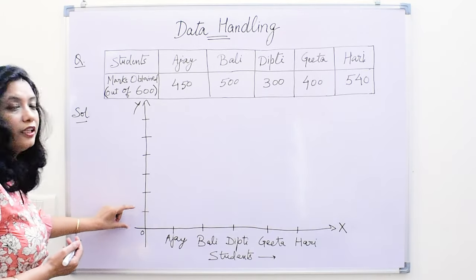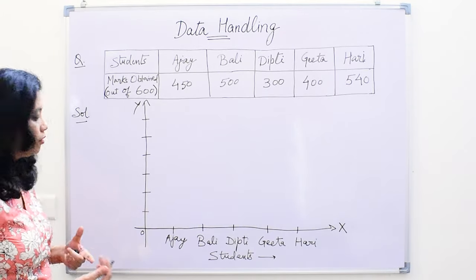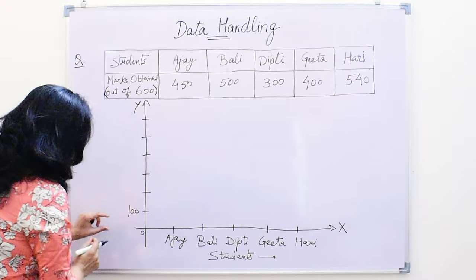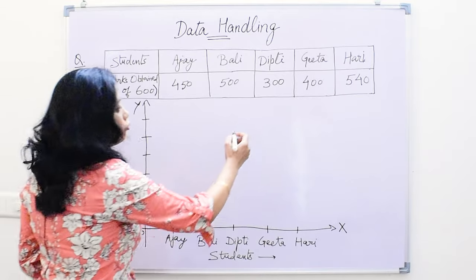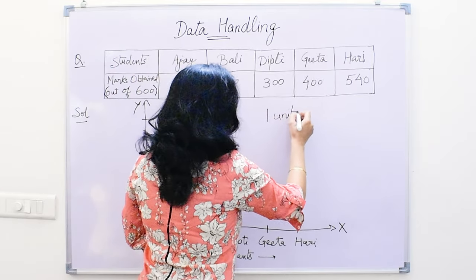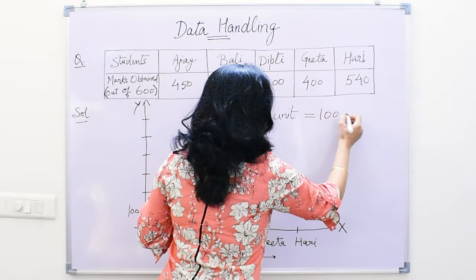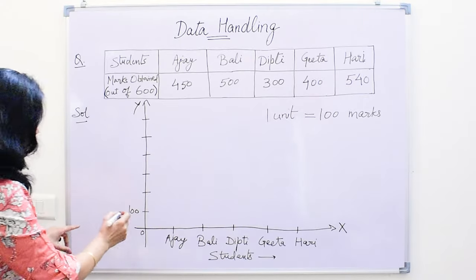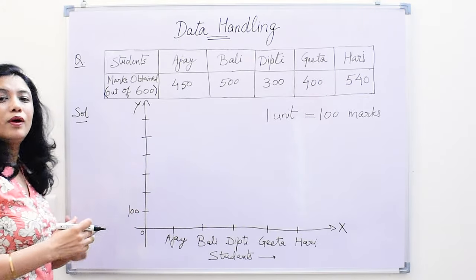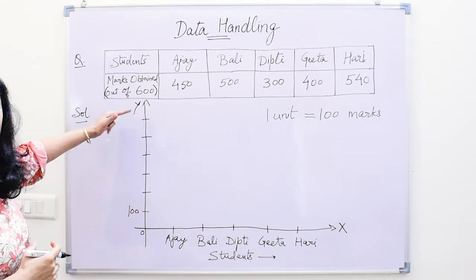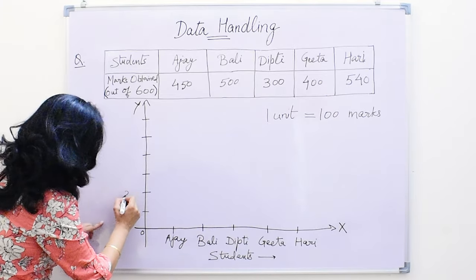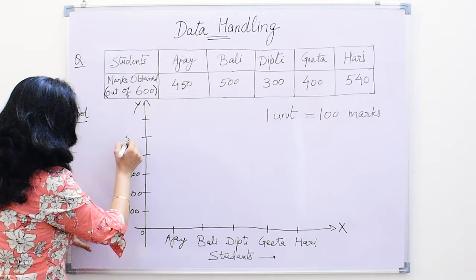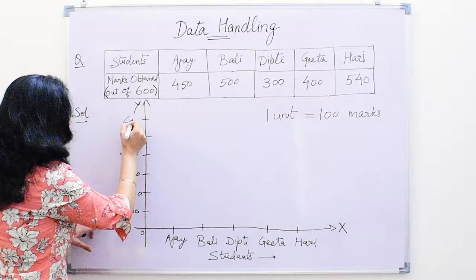We will take the unit accordingly. Here we are taking the unit as 100 — one unit is equal to 100 marks. Here we will mention the scale: one unit is equal to 100 marks. This is very important to mention. So there will be equal increments between all the divisions: 100, 200, 300, 400, 500, 600.